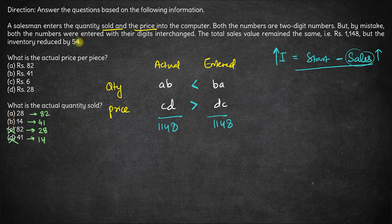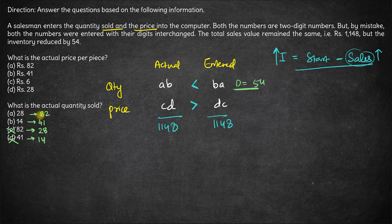It's given that the inventory reduced by 54, meaning the difference between entered and actual quantities must be 54. What is the difference between 28 and 82? It is exactly 54. What about the difference between 14 and 41? It is not 54, so that is rejected. The actual quantity sold is 28.